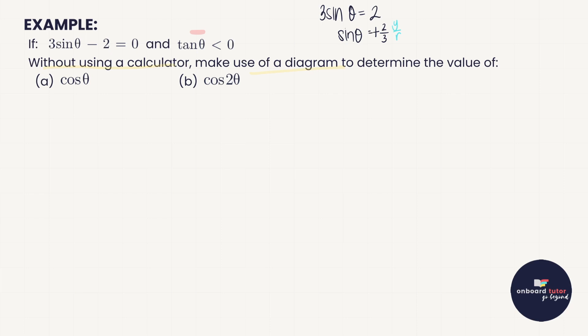Now I need to figure out where to sketch this triangle on the Cartesian plane. We've ended up with a positive fraction, so using the CAST rule, sine is positive in quadrant 1 and quadrant 2. We also know that tan θ is negative, and tan is negative in the quadrants where we don't see the T — the S quadrant and the C quadrant. Where we find two ticks, that is where we draw our triangle: quadrant 2.